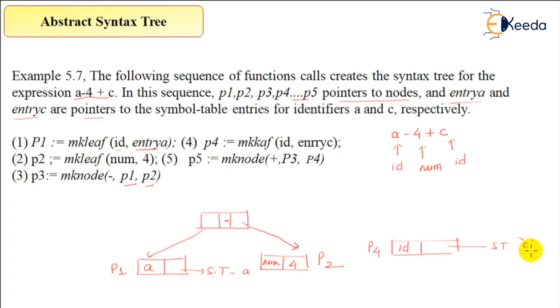This is p1, p2, this is p3, p4. Finally, we have node p5 which consists of the plus operator. This will point to p3 and this will point to p4. So this is how the syntax tree will be built.